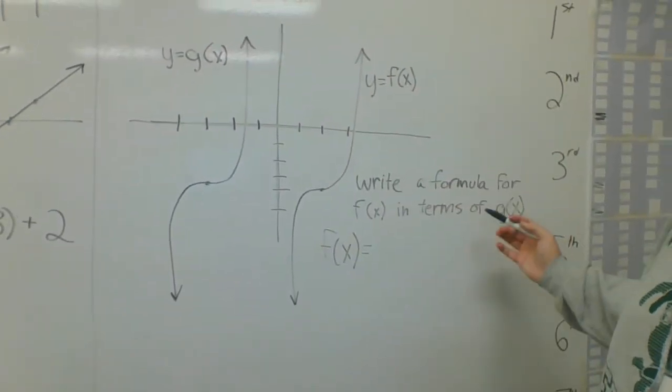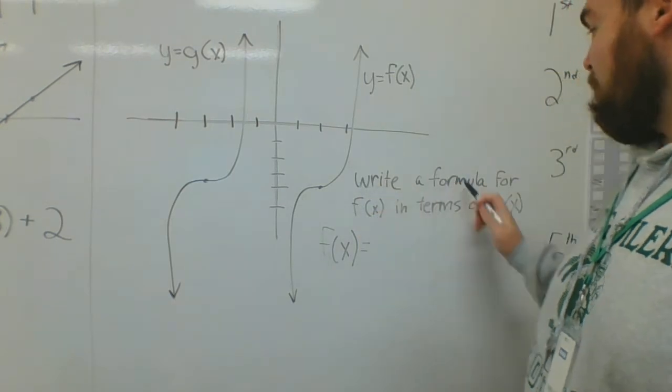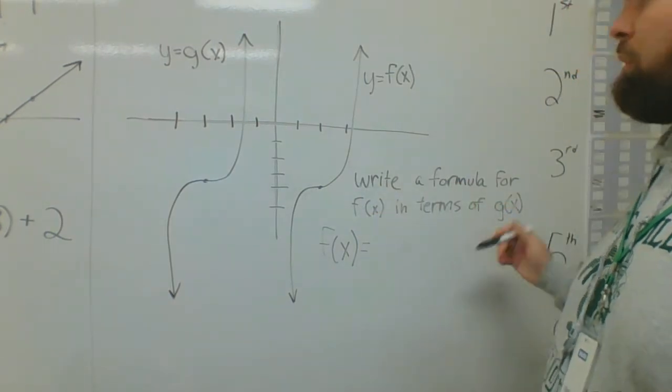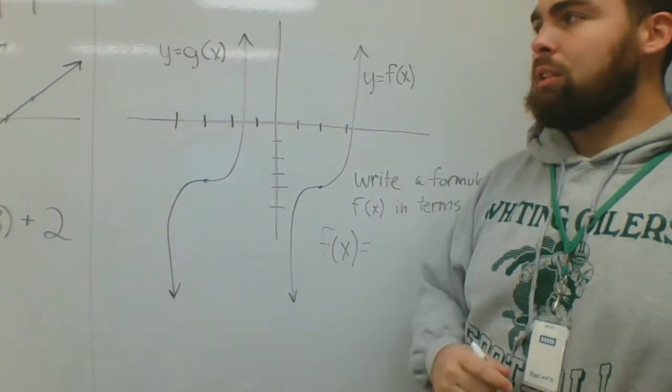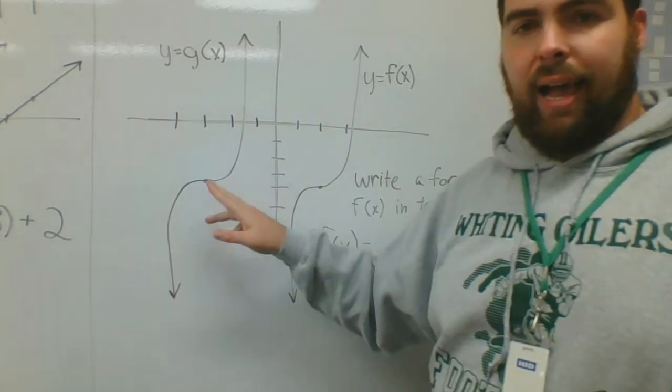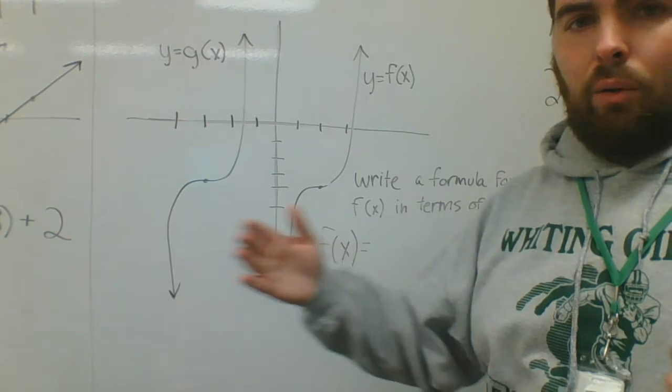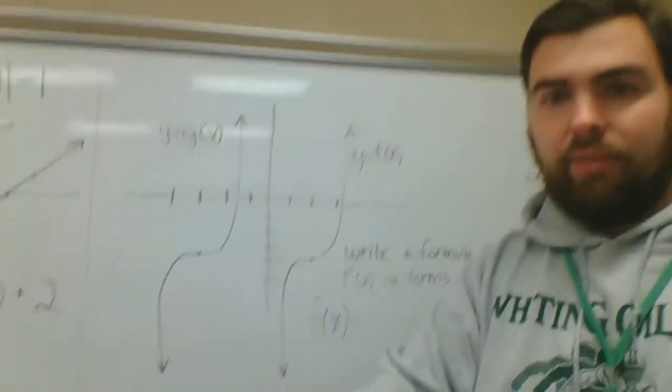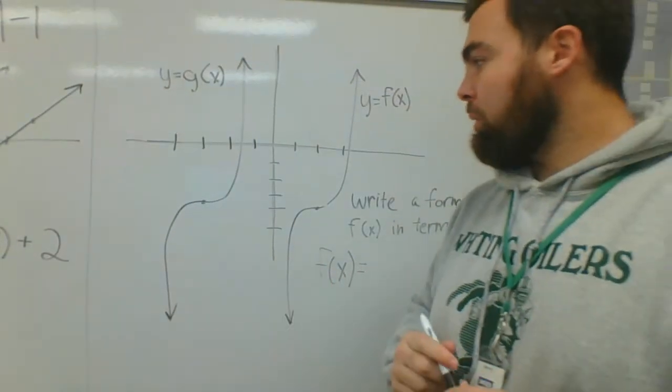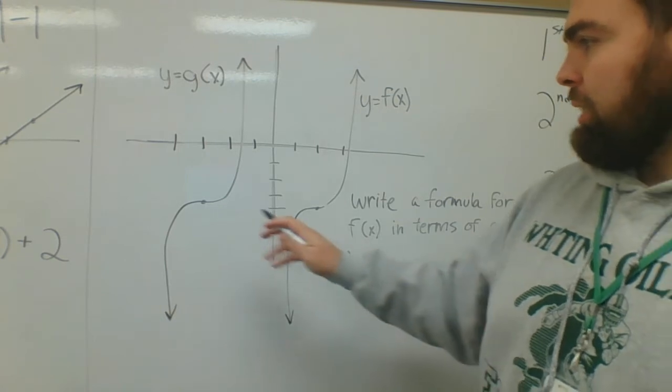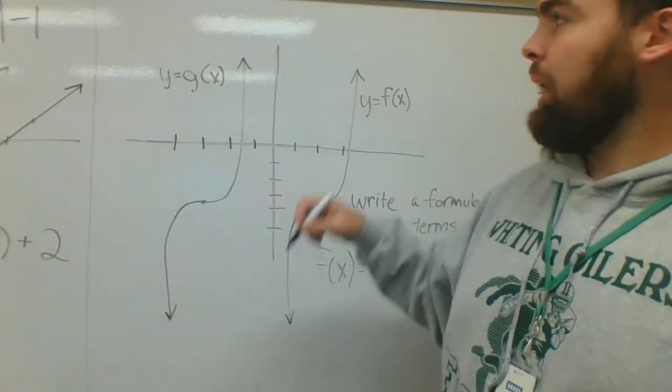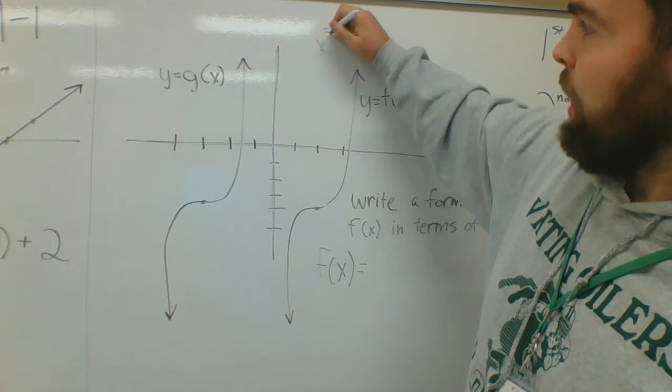Write a formula for f(x) in terms of g(x). Basically I look at g(x) and I say how do I turn g(x) into f(x). Well I figure out where it moves, does it move up down left right, how far over. So I look at this, there's a vertex here. This would be like an x to the third type of graph, this would be a cubic graph.